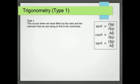So what's a type 1 problem? Well this occurs when we have filled out our ratio, the ones on the right, and the unknown that we are trying to find is the numerator. So we've got the trig ratio equals the unknown, the thing we want to find, over the side that we already know.